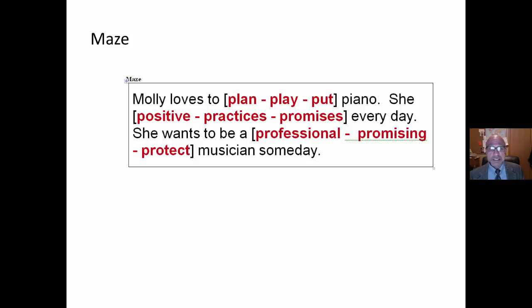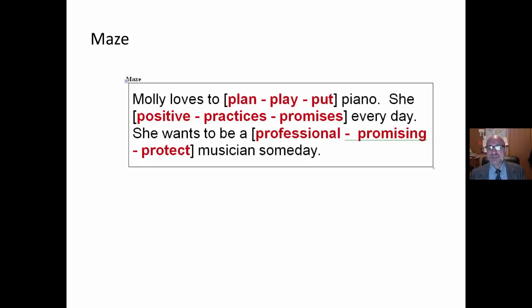The second activity is maze, which is a paragraph or series of sentences with two or three words to choose from, depending on the level. Students have to read the sentence and find the word that makes sense. We are developing the ability to use context. We teach the process to develop the skills.